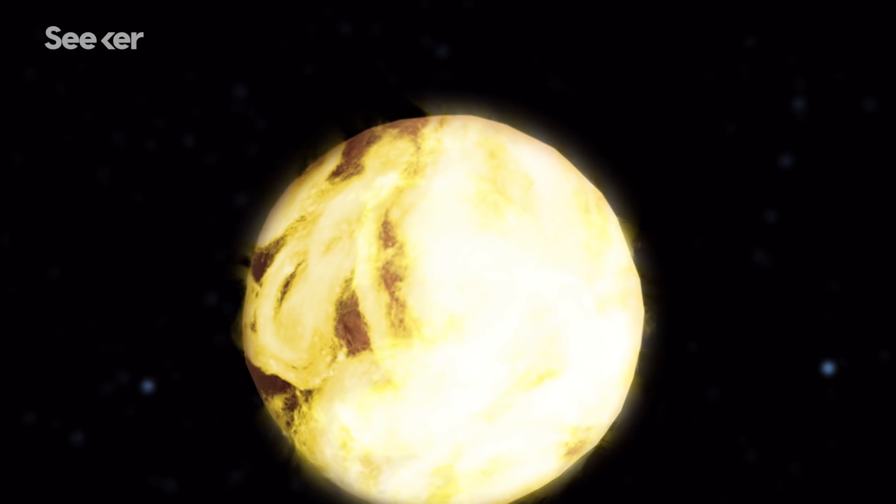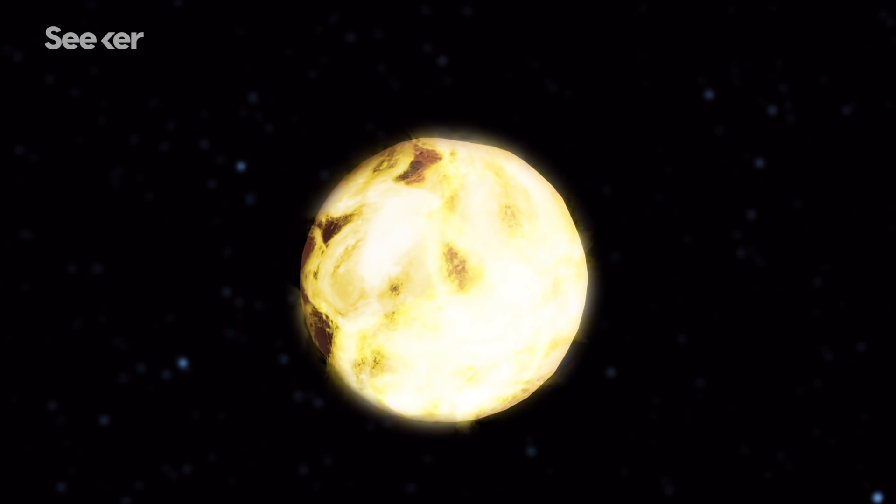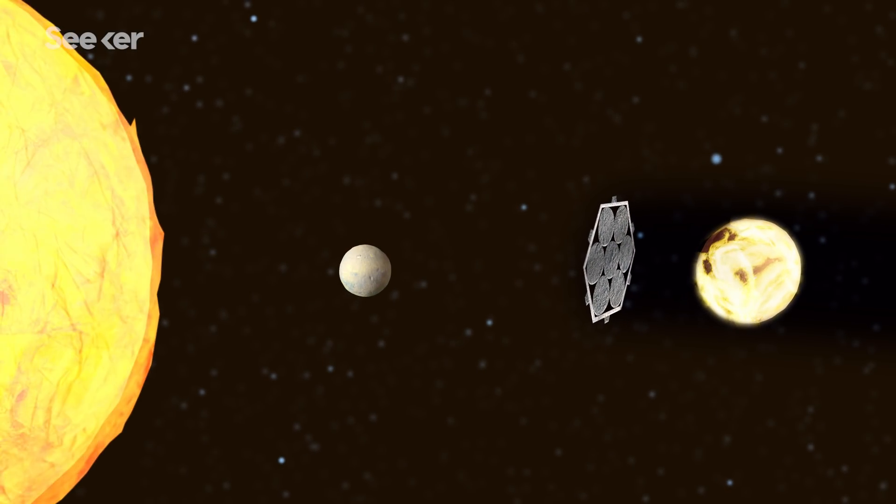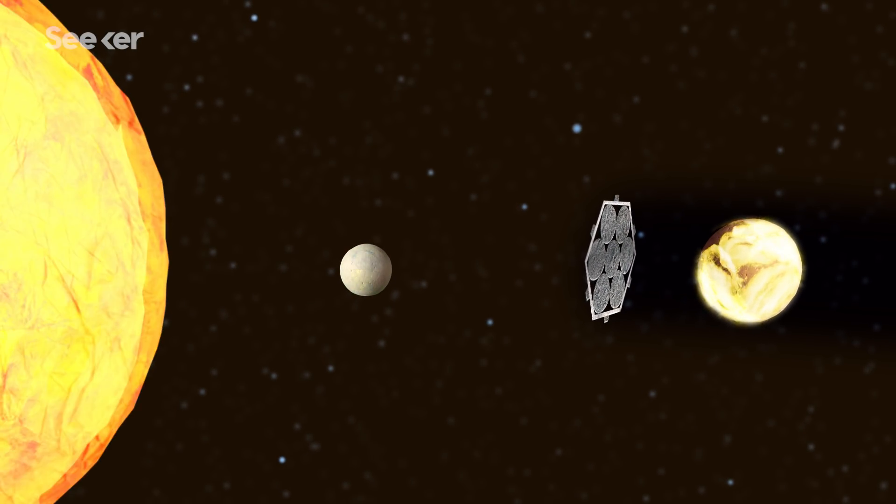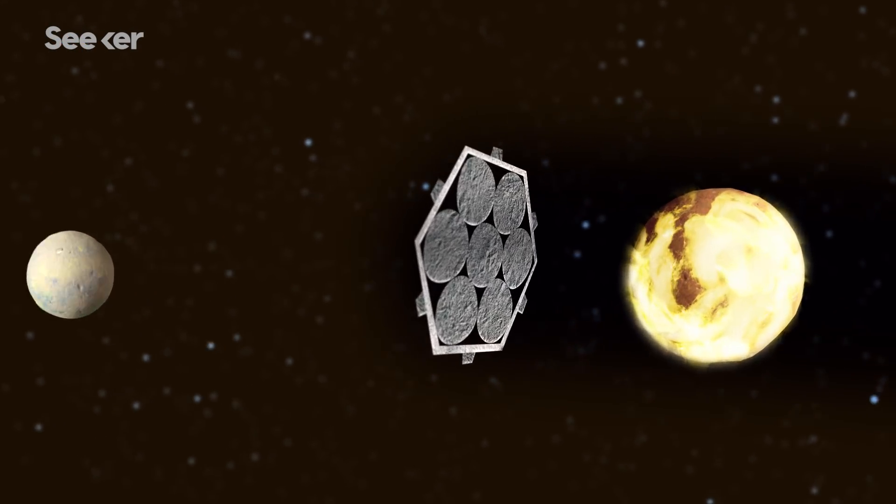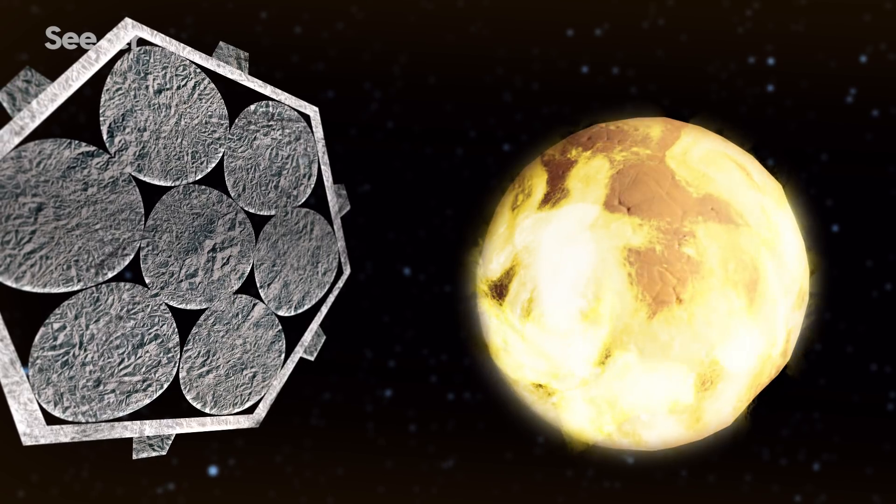Another terraforming idea suggests cooling Venus down with a giant sun blocker. A sunshade mirror would be placed in between the sun and Venus. It'd need to be slightly larger than Venus's diameter to fully shade the planet. Over time, it'll cool the atmosphere down and block the planet from solar wind.